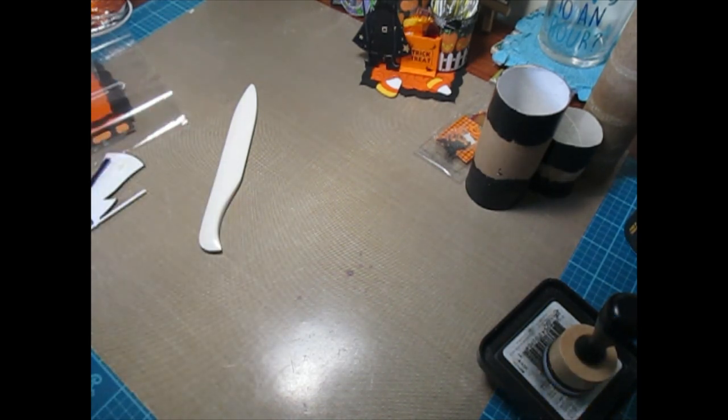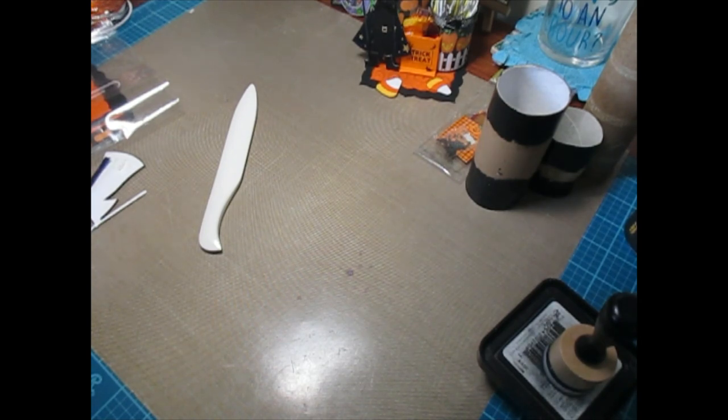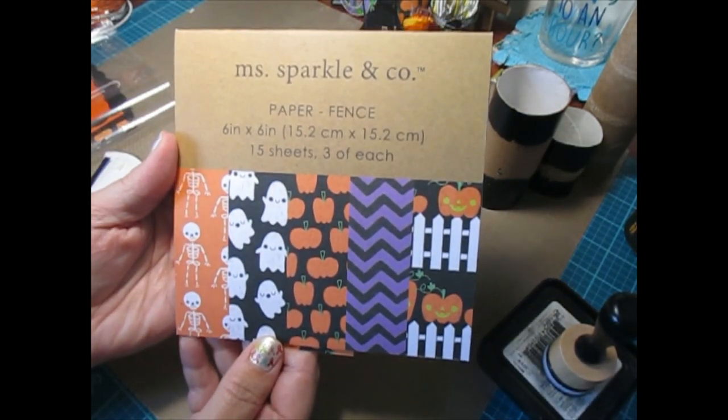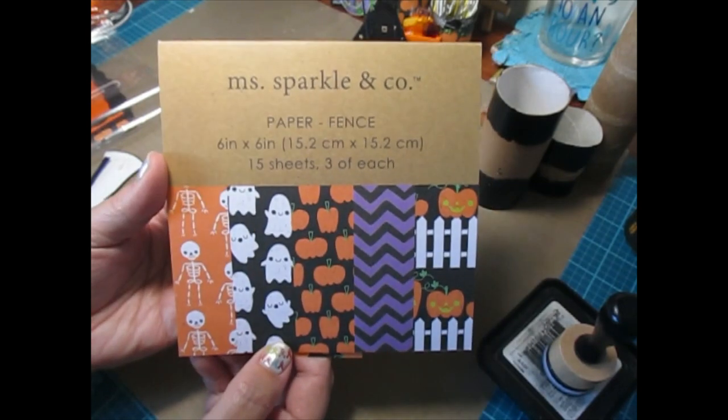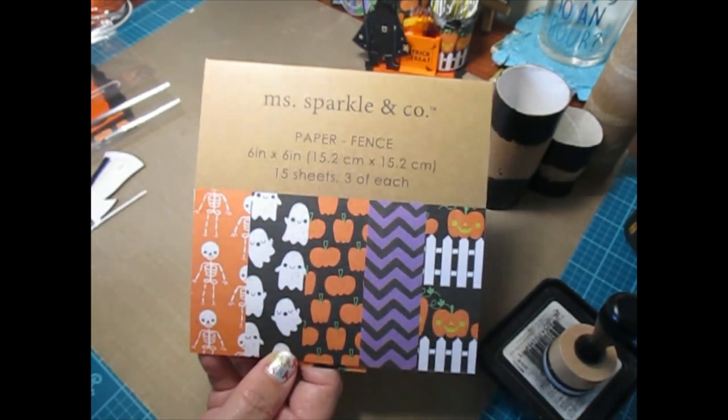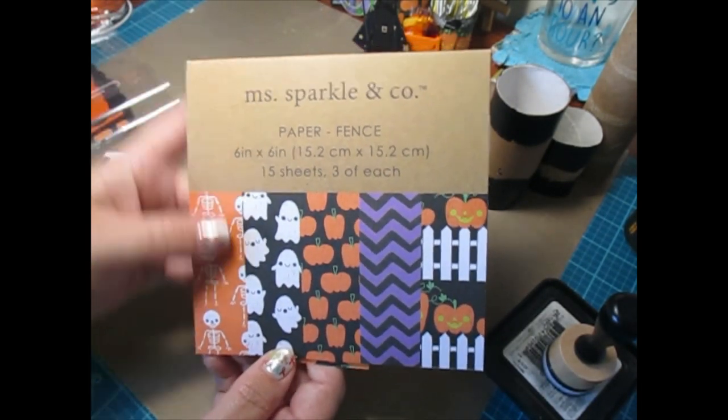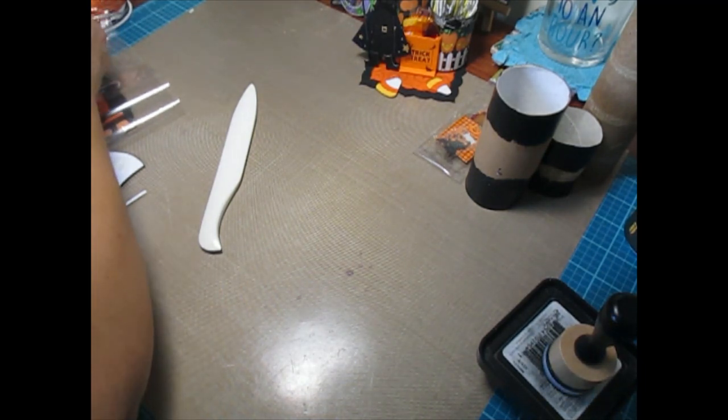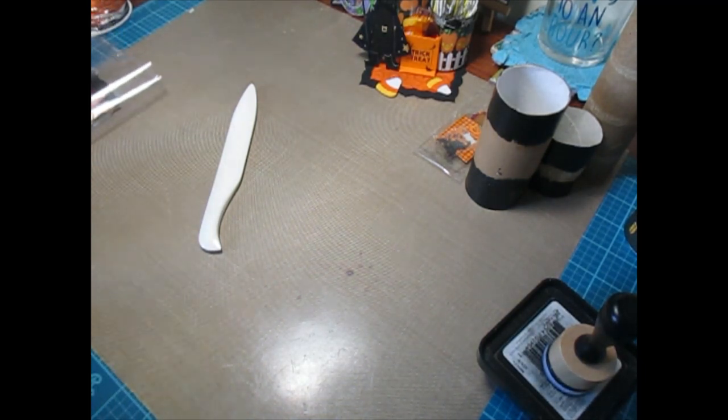The paper I used, the designer paper, came from Miss Sparkle & Company. It's called Paper Fence. I picked this up at Joann's in their $1.99 bins. Okay, so let's get started. I think we're going to make the tag first, since we need the cutter for that. And then the rest we can just assemble.